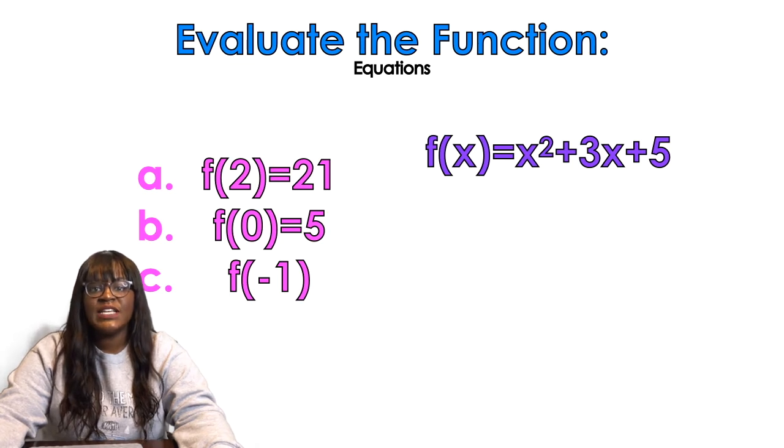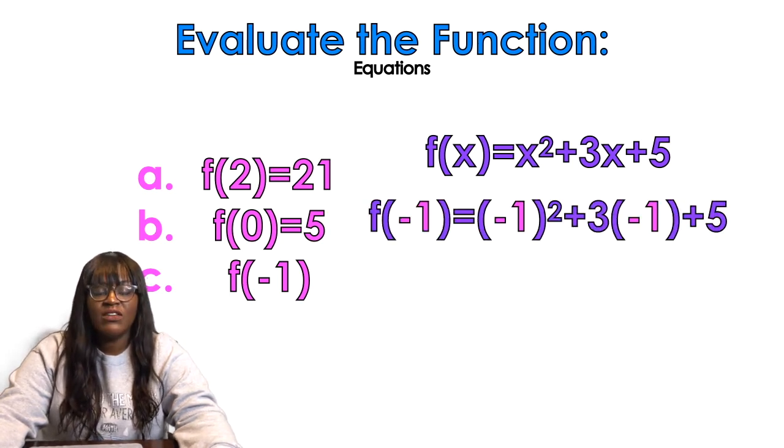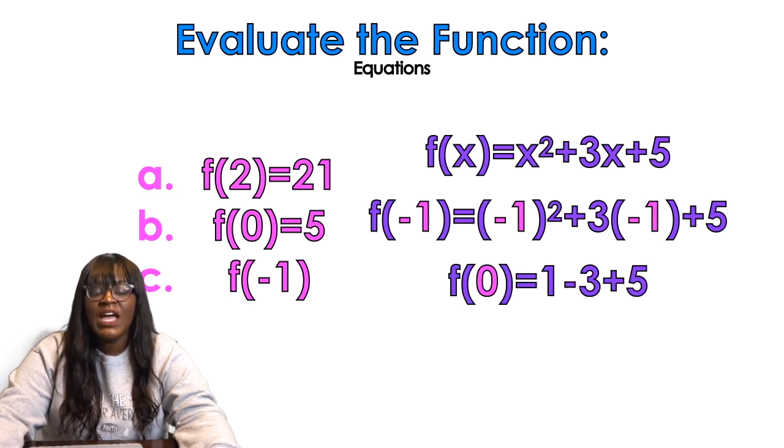So the next and last one is f(-1). When I plug in negative 1, I get negative 1 squared, which gives me positive 1. Then 3 times negative 1, which is negative 3. So 1 minus 3 gives me negative 2. Negative 2 plus 5 gives me 3. Ta-da!